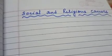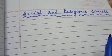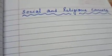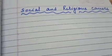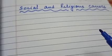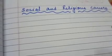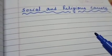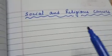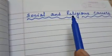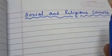In our previous class, we read about the causes of the revolt — political causes, including the Doctrine of Lapse, and economic causes, including various types of land revenue settlements. Today we have to read about social and religious causes.